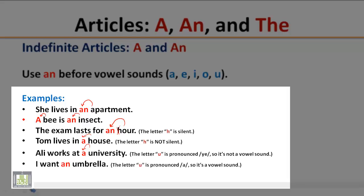I want an umbrella. The word umbrella starts with the letter U, but it is pronounced A. A is a vowel sound, so it is preceded by An. An umbrella. So be careful: Choose A or An because of the sound, not because of the spelling, as in a university and an umbrella.